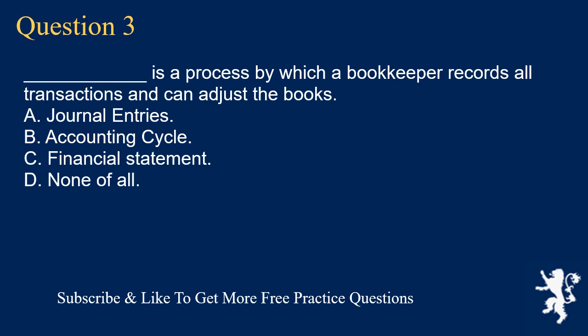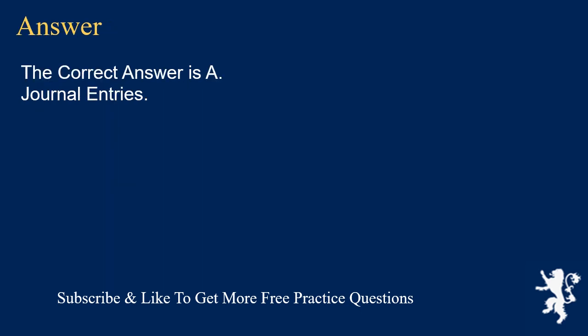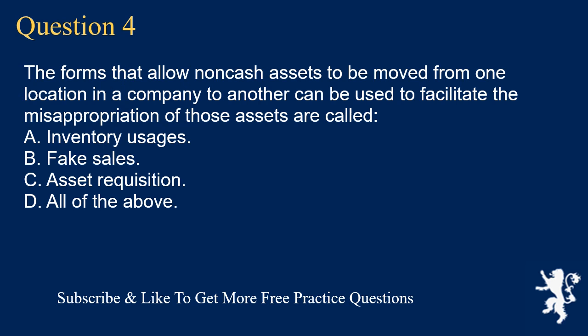Question 3: Underscore is a process by which a bookkeeper records all transactions and can adjust the books. A. Journal entries. B. Accounting cycle. C. Financial statement. D. None of all. The correct answer is A. Journal entries.